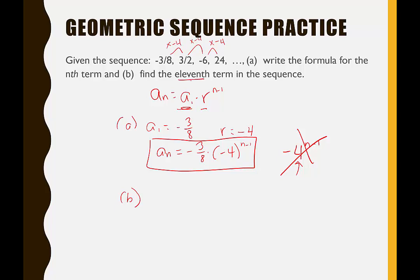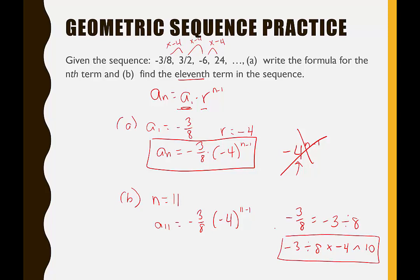For part B, we're looking for the 11th term, so n equals 11. That gives: a sub 11 equals negative 3/8 times (negative 4) to the 11 minus 1. Do 11 minus 1 in your head: that's 10. In your calculator, enter negative 3 divided by 8, times (negative 4) to the power of 10. The result is negative 393,216 — that's the 11th term in this geometric sequence.